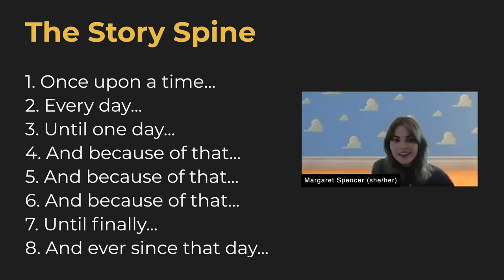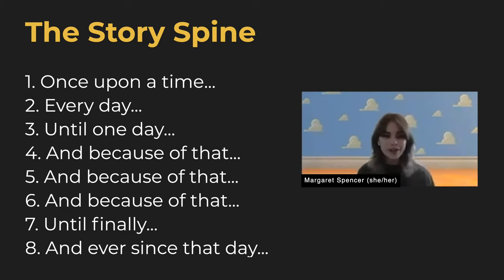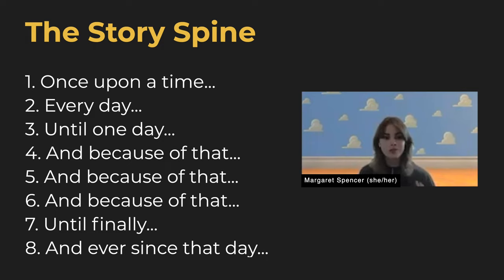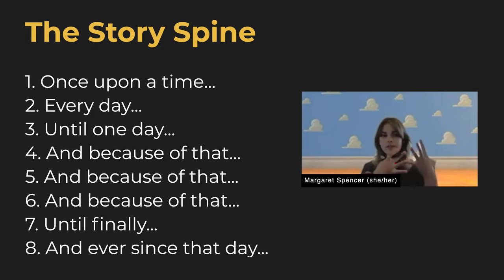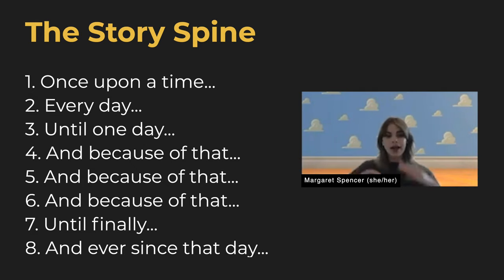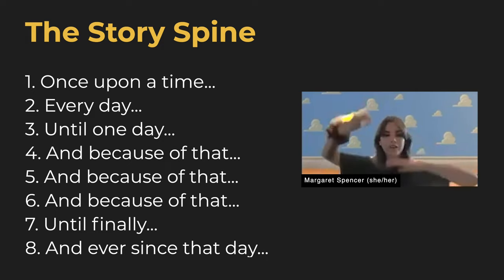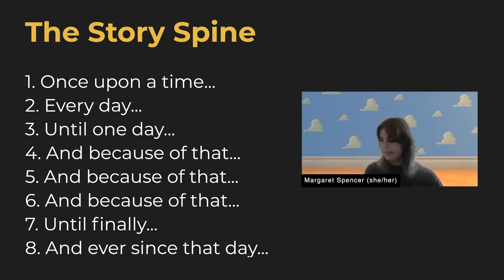Story spine is a super reductive economic tool that we use at Pixar all the time, from improv games to beating out an actual movie — figuring out what the most important events in a film are as simply as possible, so that we can add all of the fun details and complexities on top later. And it goes something like this.